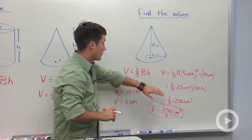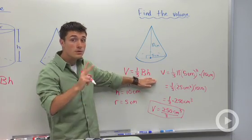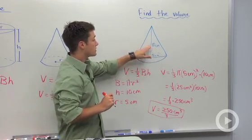The key thing to this problem is remembering our volume formula and that the only two things that you need to know to calculate the volume of a cone is the radius and the height.